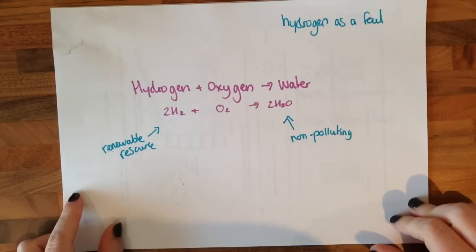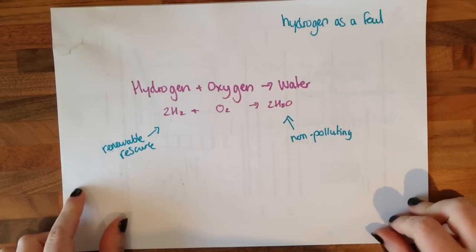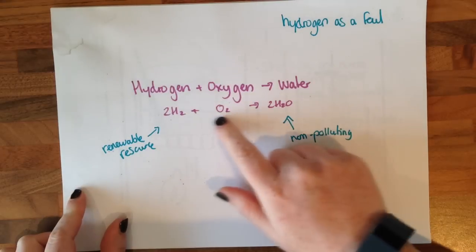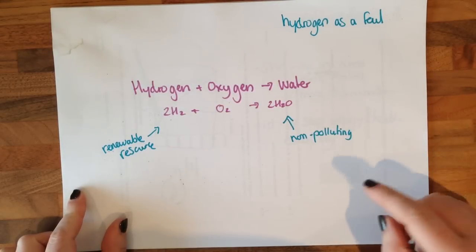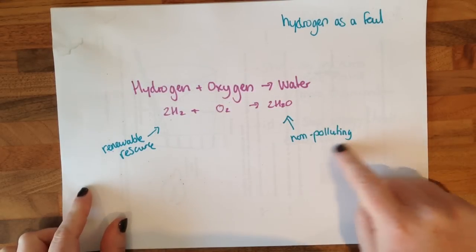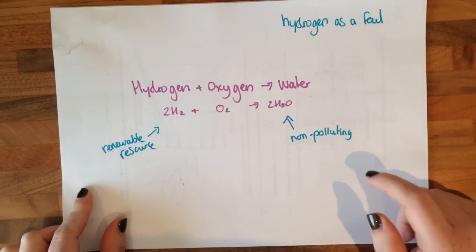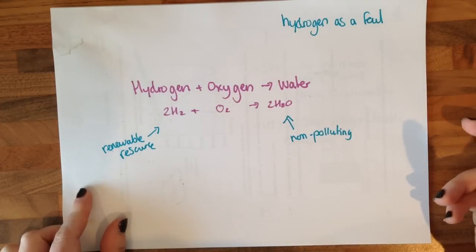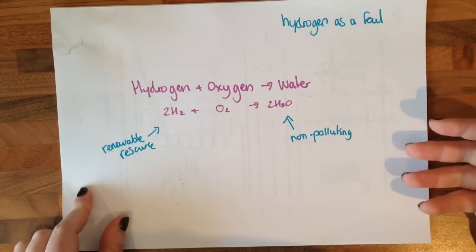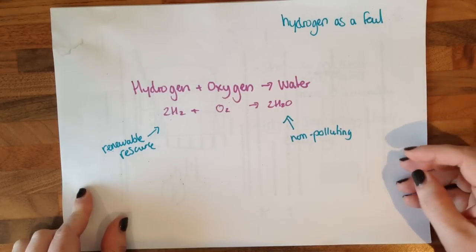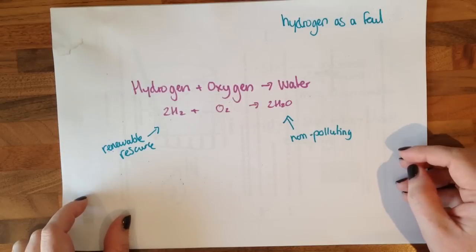You need to know that hydrogen can be used as a fuel. We have hydrogen plus oxygen and it's going to turn into water. The really good thing about this is that water is non-polluting — it doesn't contribute towards climate change and it doesn't contribute towards acid rain.